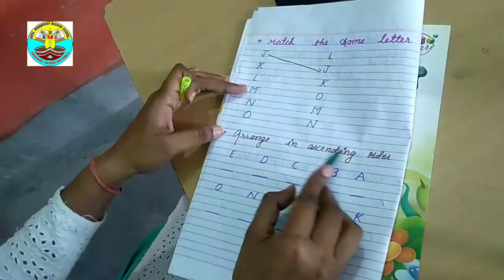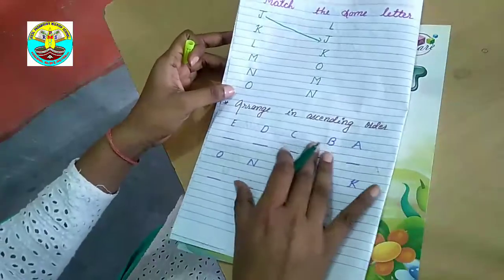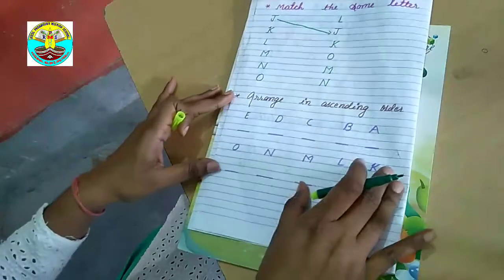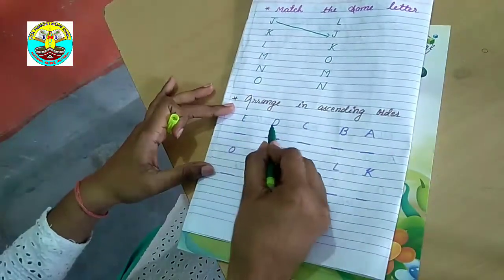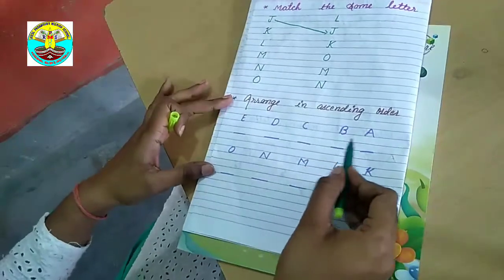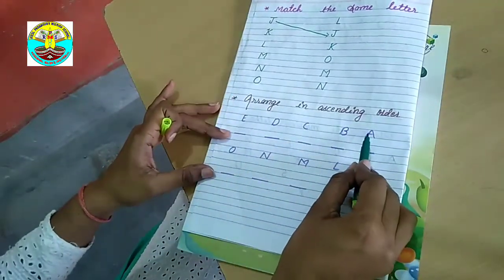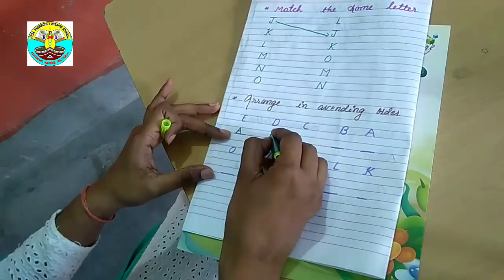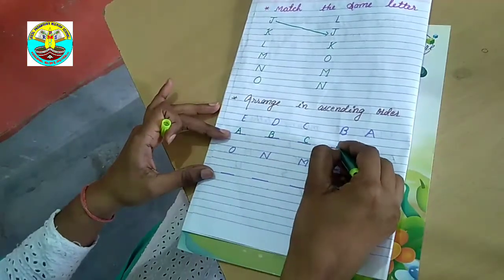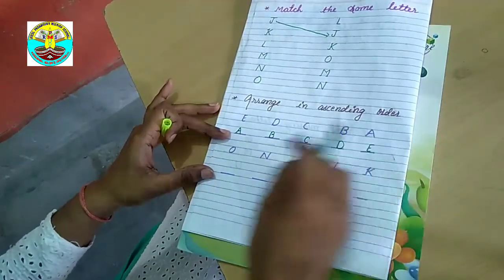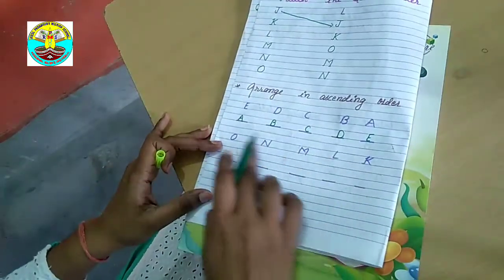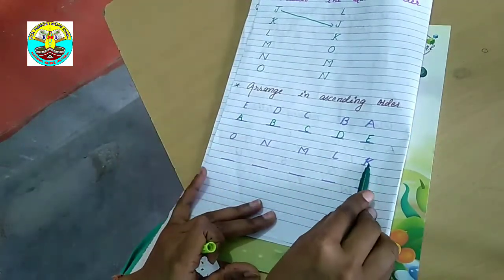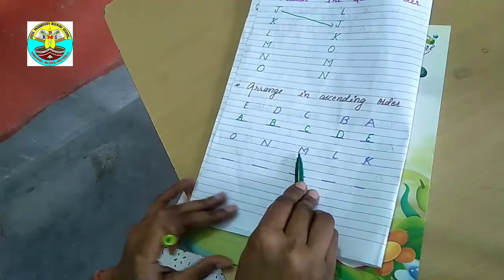Arrange in ascending order. I have some letters which are not arranged. I will arrange them in alphabetical order. I will write E D C B A wrong, so I will arrange it. First here A, then B, C, D. Next order which is O N M L K. I will arrange it, so the first one is K, then L, M, N, O.